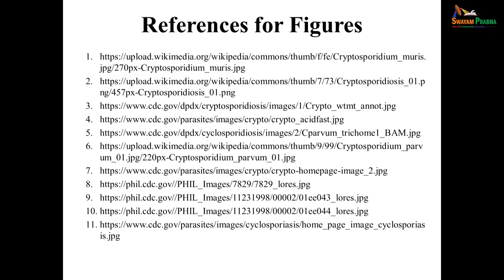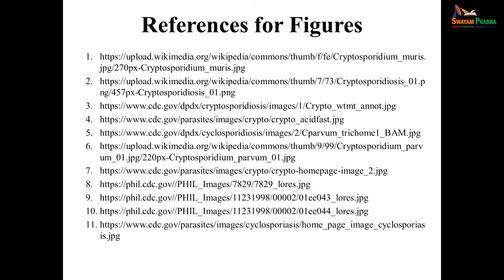In summary, all the different intestinal coccidia organisms cause more severe infection in immunocompromised patients than in healthy people. In healthy people, infections may be asymptomatic and go unnoticed, but in immunocompromised individuals they cause very severe, potentially fatal symptomatology due to dehydration from watery diarrhea. Thank you.